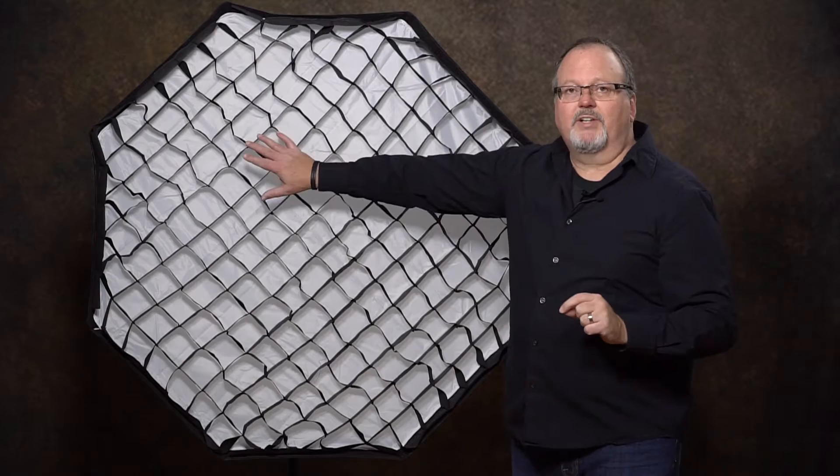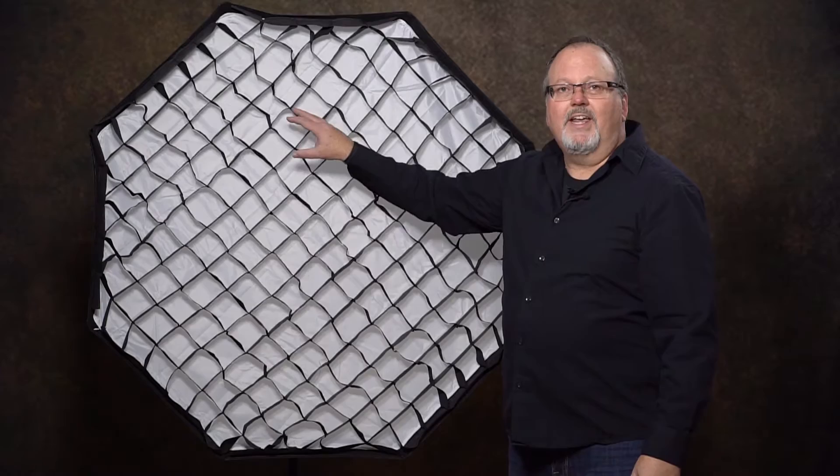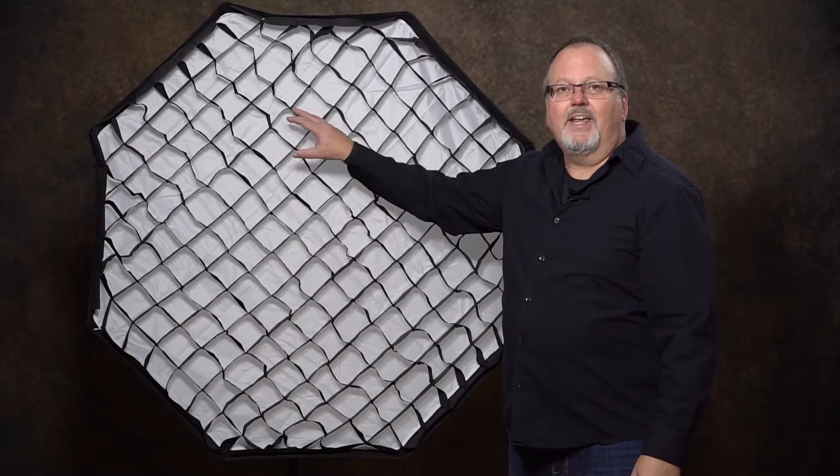So let's talk about some of the features. All my softboxes come with a grid, which is really important if you're trying to control your light precisely, if you're trying to control spill. I don't know why so many other softbox manufacturers make you pay extra for a grid. That's ridiculous. It should be included because you need it at some point or another. You have to have a grid. So we include it.